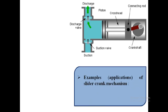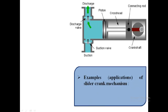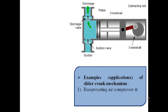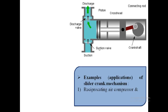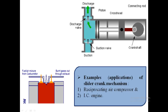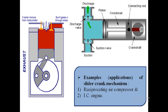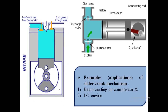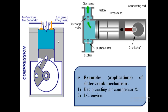Examples or applications of slider crank mechanism: the first example is a reciprocating air compressor, and the second example is an IC engine. In the images you can see the working of a reciprocating air compressor and an IC engine.